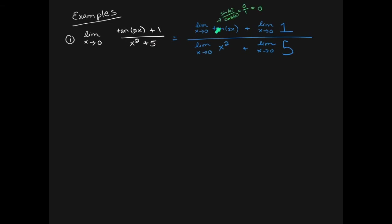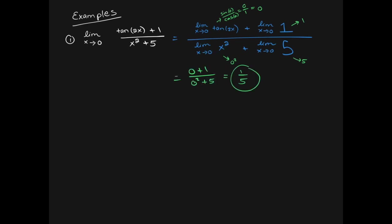Using limit laws, we break the limit of a complicated expression into individual pieces: the limit of tangent, the limit of the constant one, the limit of x squared, and the limit of five. Tangent is sine over cosine, so at zero we get zero over one, which equals zero. The constant one stays one, and five stays five regardless of x. Since polynomials are continuous everywhere, we can just plug in. Putting everything together, the final answer is one fifth.